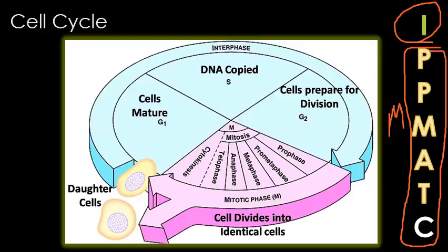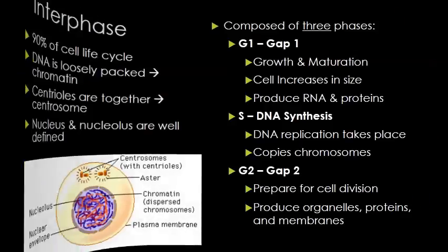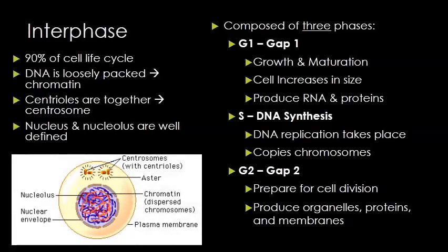Mitosis is the splitting of the nucleus and involves five sub-steps, whereas cytokinesis is the splitting of the cytoplasm — splitting everything besides the nucleus. Cells spend the majority of the cell cycle in interphase, and the purpose of interphase is for cell growth and to prepare for mitosis and cytokinesis. This is really 90% of the cell's life cycle.